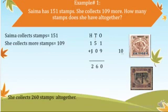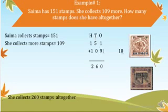Now the second number is 109. So 1 we write again here in the 100th column, 0 we write here in the 10th column, and 9 we write here in the 1's column. After writing these numbers in the place value chart, we start addition from the 1's column. So there are 2 digits in the 1's column: 1 and 9.